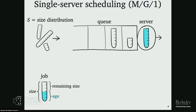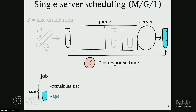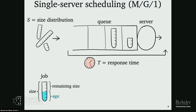At some point we'll finish a job. When a job exits, the total amount of time from arrival to completion is called that job's response time — both the time serving the job and time spent waiting. We want low response times, because most of us don't like waiting. That's the main metric we're going to care about today.